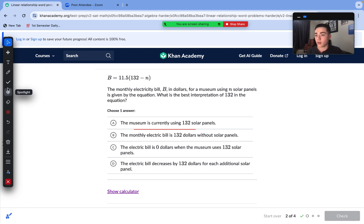So the monthly electric bill B in dollars for a museum using n solar panels is given by the equation. What is the best interpretation of 132 in the equation? So currently, 132, we need to understand that this is an electricity bill. Can we see that our number of solar panels is subtracting from our electricity bill? So it's getting cheaper. And then we can kind of see, if we have, well, it's not obviously, we're not using 132 solar panels because 132 is not that value. But then we can see if that one of these answers is going to be correct. Let's try to run each of these.